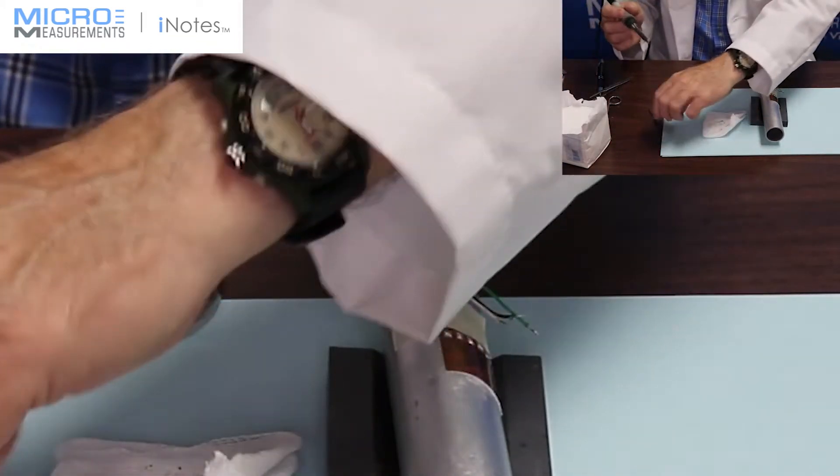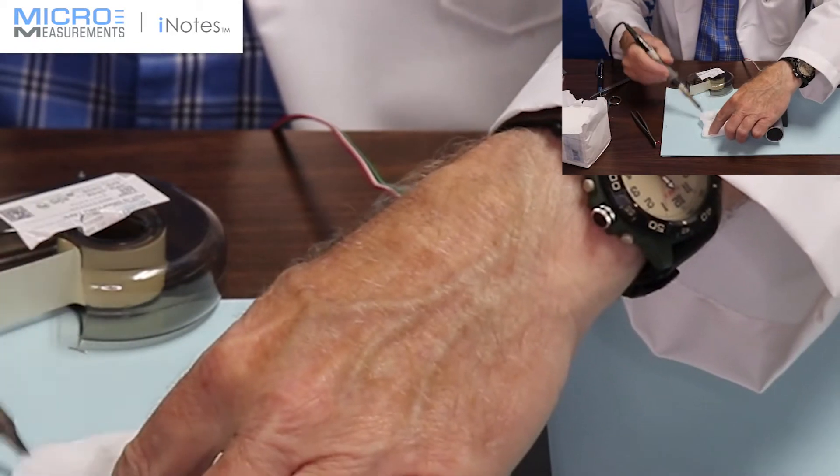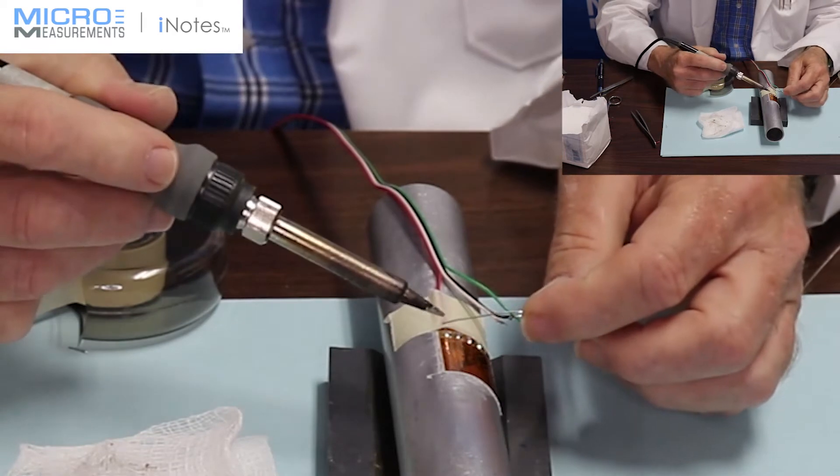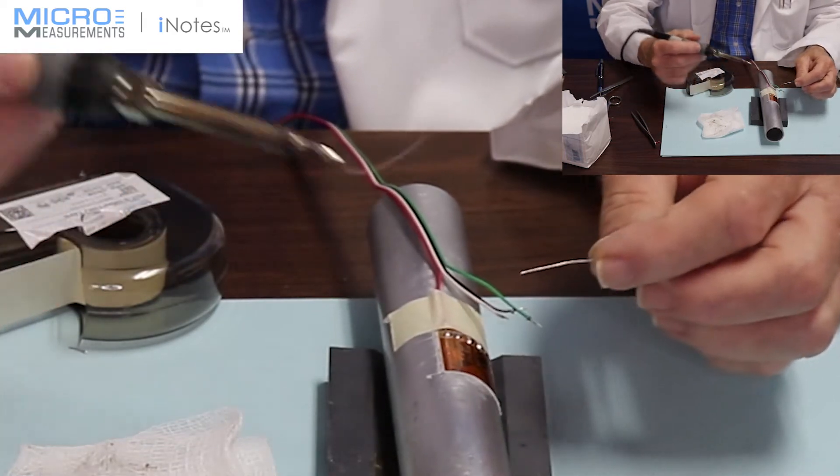Again, take a clean dry gauze sponge, clean the tip, lightly tin the tip, and reflow that solder junction.